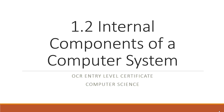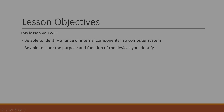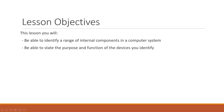Welcome to the second lesson for Test 1 of the OCR Entry Level Certificate in Computer Science, covering the internal components of the computer system. By the end of this lesson, you should be able to identify a range of internal components inside a computer system and be able to describe their purpose and function.